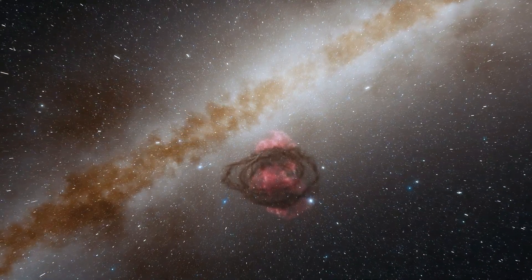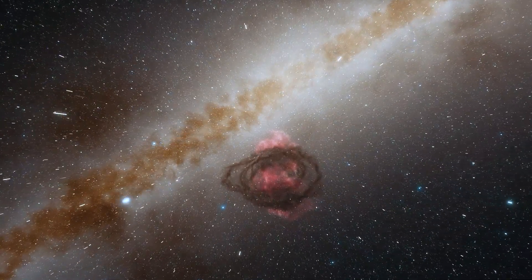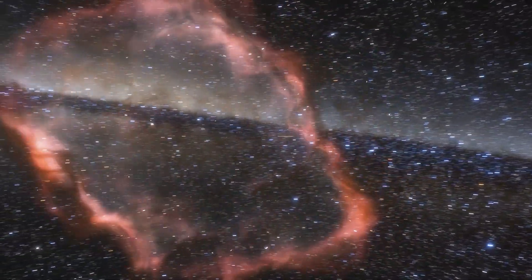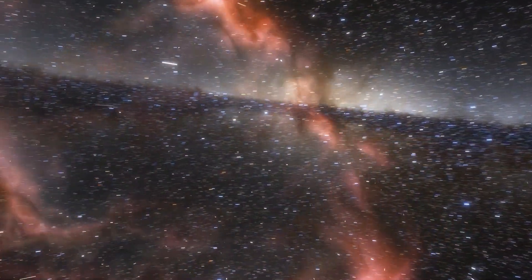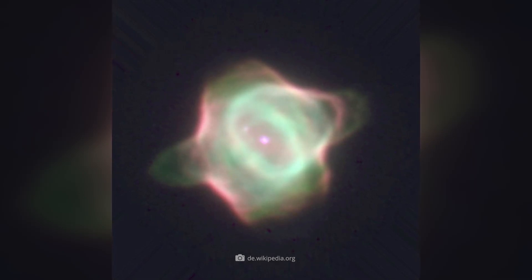In fact, only 20% of all known planetary nebulae are approximately spherical. The majority of these objects, on the other hand, are far more complex, and their structures can take a wide variety of forms.